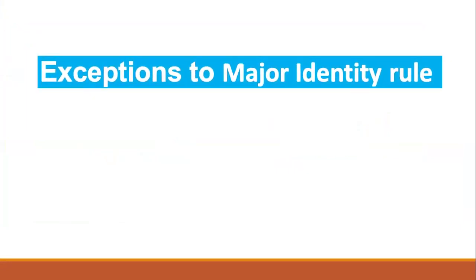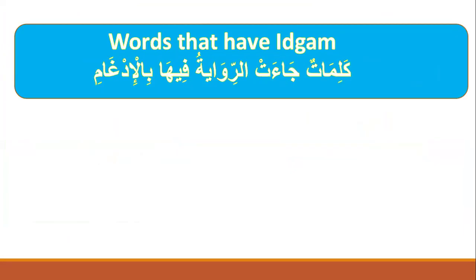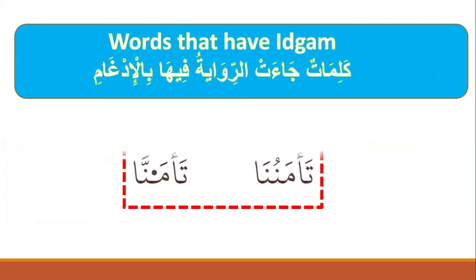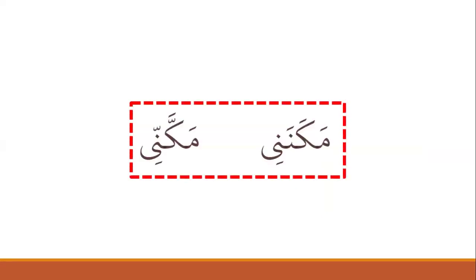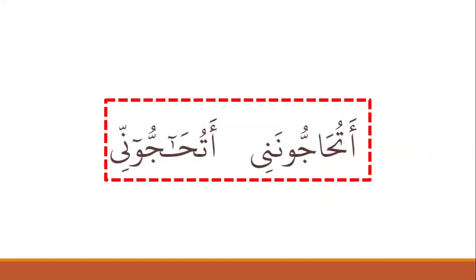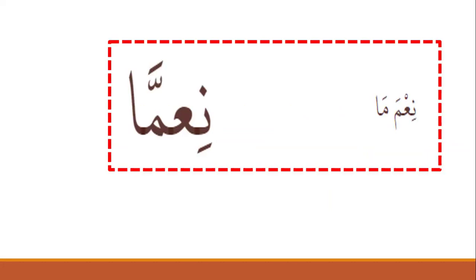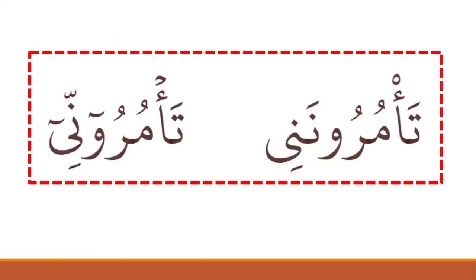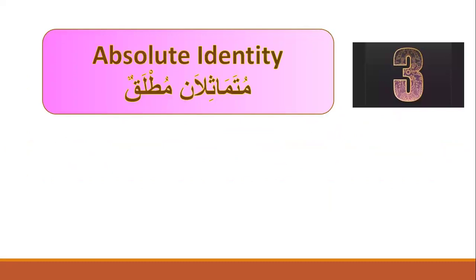There are exceptions to the major identity rule. Words such as: تأمنونا (becomes تأمنا), ما كنني (becomes ما كني), أتحاجونني, نعمما (becomes نعما), and تأمرونني — these are exceptions where idgham is not applied in the usual way.